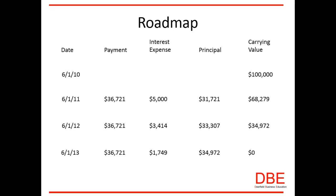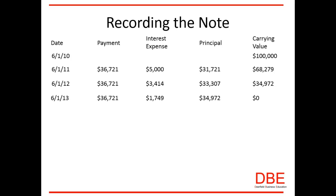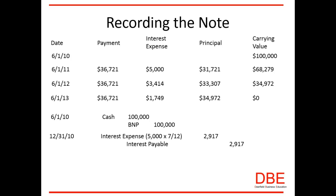Now that you have the roadmap, you're going to create your journal entries. The first entry is the issuance of the note — the company receives one hundred thousand dollars in cash and creates a liability of one hundred thousand dollars.